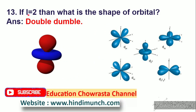Next question: if L is equal to 2, then what is the shape of the orbital? Answer: double dumbbell. Also, L equal to 0 gives spherical shape, and L equal to 1 gives dumbbell shape.